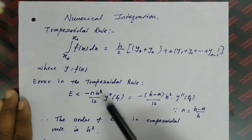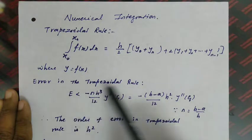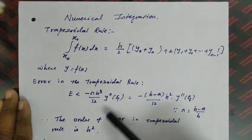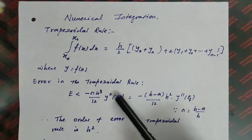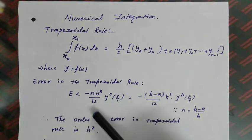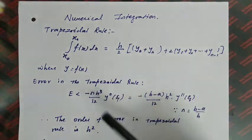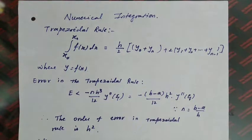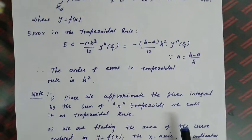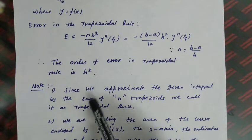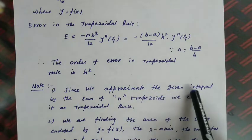These two things — the error in the trapezoidal rule and the order of error in the trapezoidal rule — are two important theory questions under numerical integration. Questions can be asked like: 'What is the error in the trapezoidal rule?' or 'What is the order of error in the trapezoidal rule?' The first note says that since we approximate the given integral by the sum of n trapezoids, we call it the trapezoidal rule.